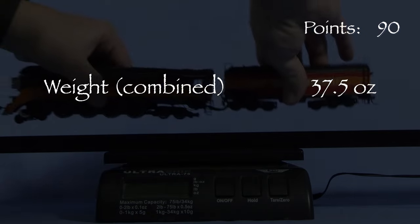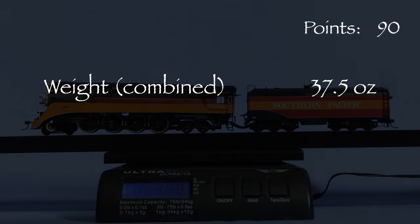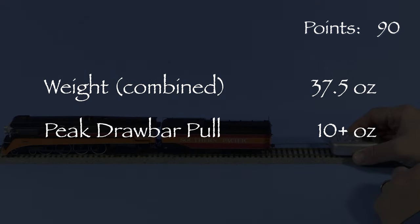The engine and tender together weigh 37.5 ounces. I was unable to get a consistent reading with my normal pull test. I measured drawbar pull in excess of 10 ounces on my force gauge, but the drivers stopped instead of spinning and I was afraid of damaging the engine so I stopped the test. Pull in excess of 10 ounces is outstanding and it certainly feels like a very strong engine.